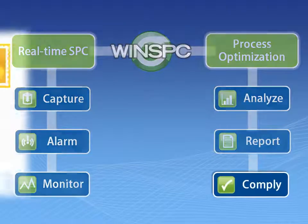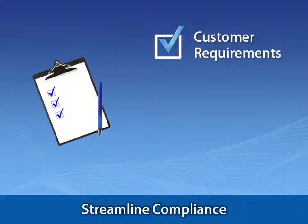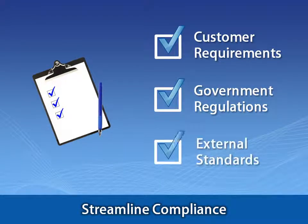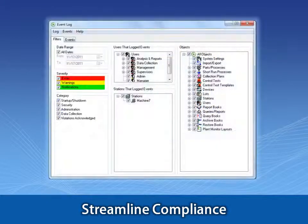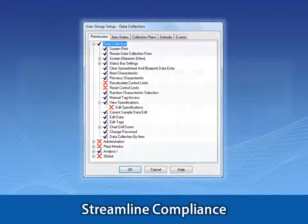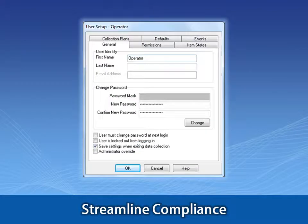Complying means satisfying customer requirements like the testing and reporting of critical characteristics, government regulations such as those from the FDA, and external standards from bodies such as ISO. You can count on WinSPC's audit trail, event log, user permissions, summary reports, and password management to automate many of your compliance tasks.